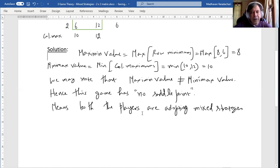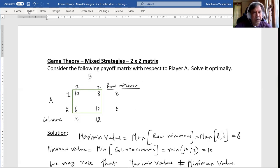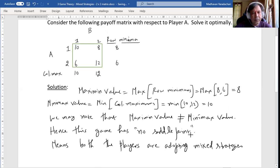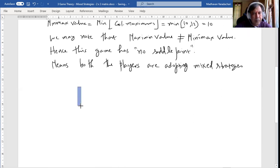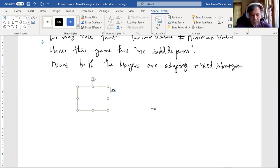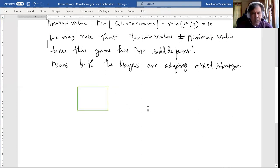Now how do we proceed for a 2x2 problem? Let us again consider the table. So we have the payoffs as 10, 8, 6 and 12. This is A1 because it is corresponding to player A. This is A2, this is B1, this is B2 because these two strategies are corresponding to player B.